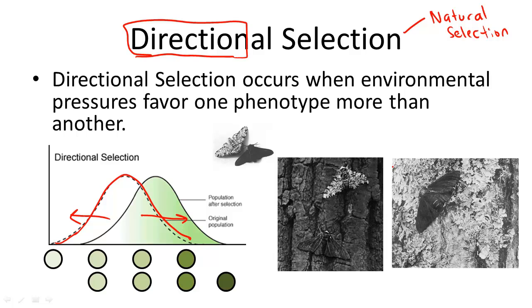In this example to the right, moths - these populations of moths can be born in a variety of different traits. They can be born black, white, gray, all these varieties in between.